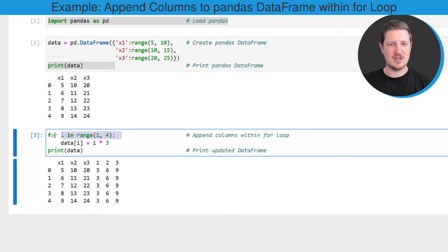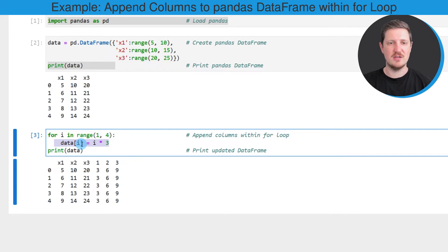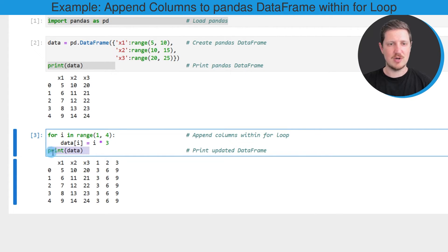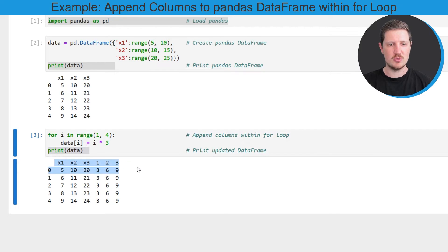In the first line of this code box I'm using a for loop, and then in the second line I'm specifying what should be conducted within this for loop. In this case I want to append a new column for each of the loops, which contains the index i times the value three. Then I'm printing our updated DataFrame below the code box.